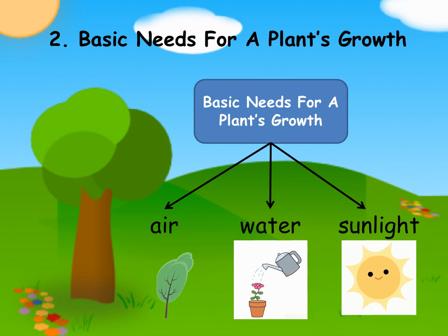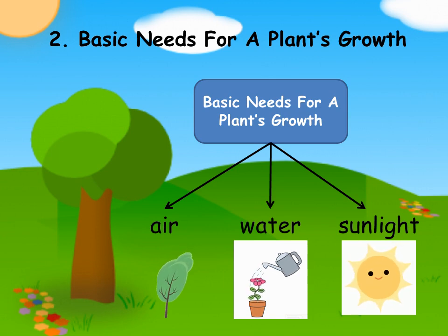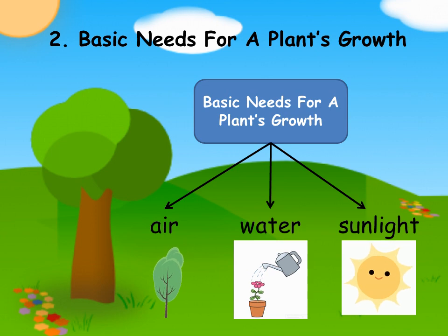Now, let's look at the basic needs for a plant's growth. For a plant to grow, it needs air, water, and sunlight.